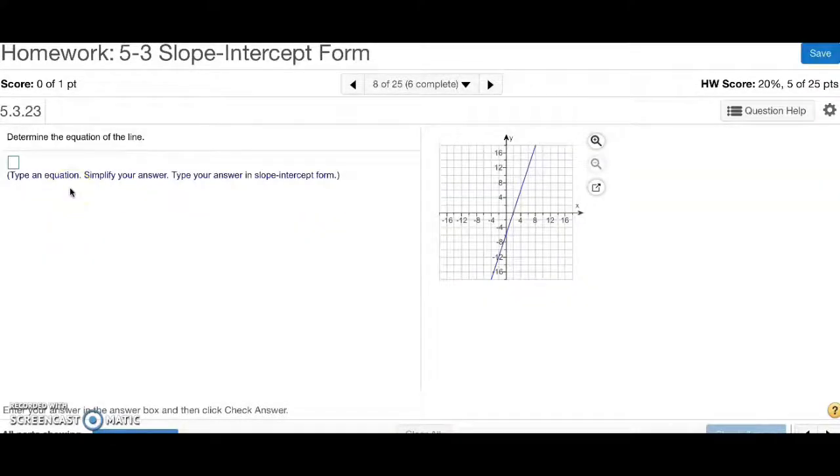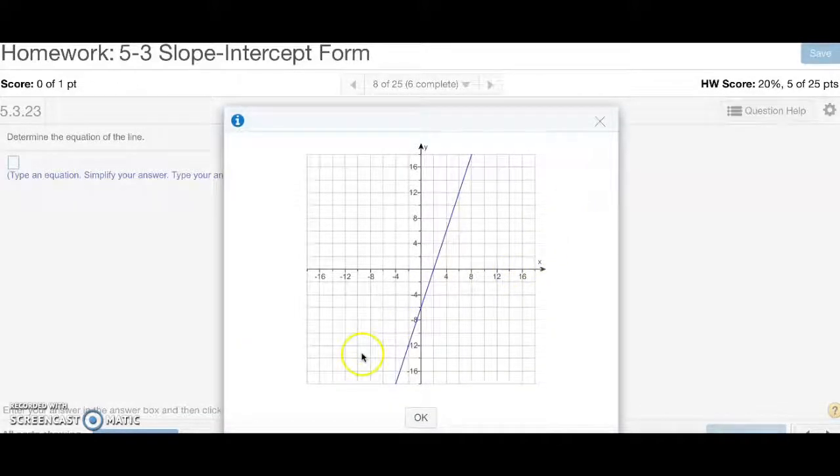Number 8, determine the equation of the line. We need two things to have an equation, the slope-intercept form. That is the slope and the y-intercept. Making this graph larger, y-intercept is negative 6. These are going down by 2s. This is also going to the left and right by 2. So, y-intercept of negative 6.